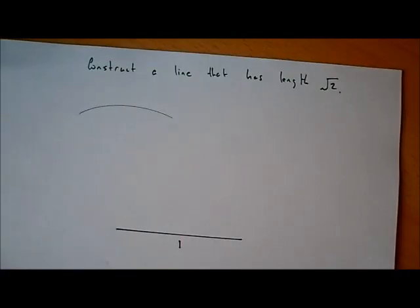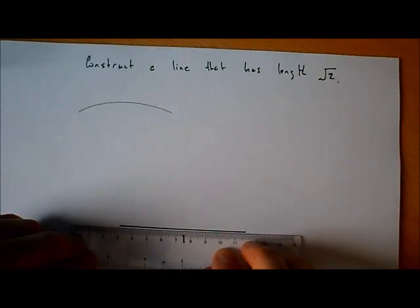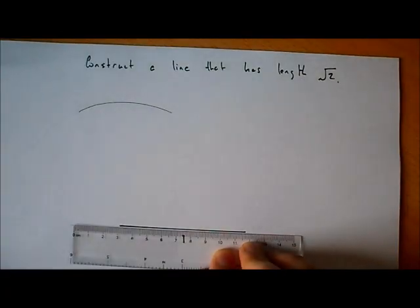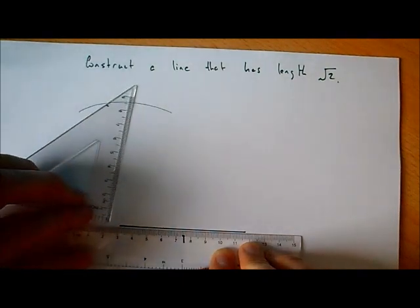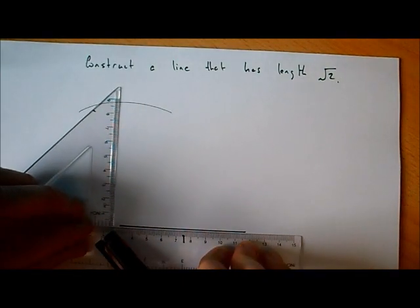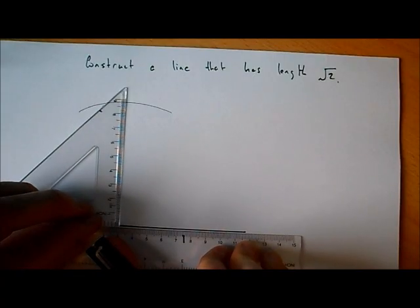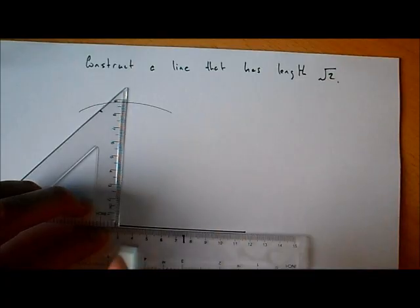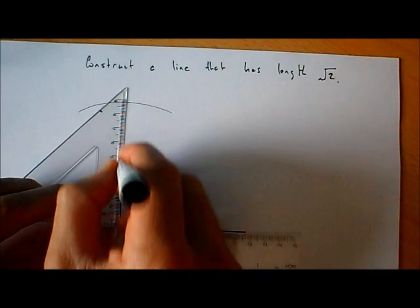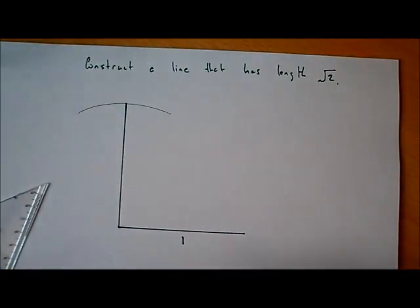Now I'm going to draw a perpendicular line, so I'm going to take my ruler, put it here parallel to the original line, and get my set square, put it on the edge of the ruler, and hold it to the edge of the ruler like that. So now we can definitely get a perpendicular line. I'm going to draw this line all the way up here. Both of these lines are exactly the same length — this is 1 and this is also 1.